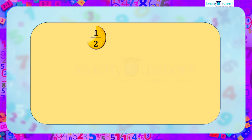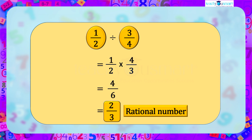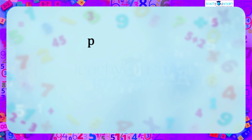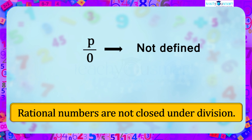Dividing 1/2 by 3/4: we write 1/2 multiplied by the reciprocal of 3/4, that is 4/3, which gives 4/6. Its reduced form is 2/3, which is also a rational number. But if we take a rational number p divided by another rational number 0, we get p/0, which is not defined. Therefore, rational numbers are not closed under division.